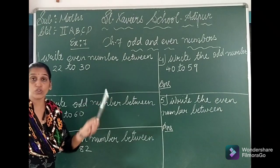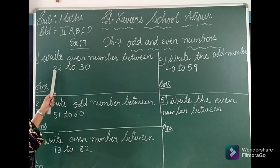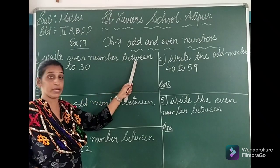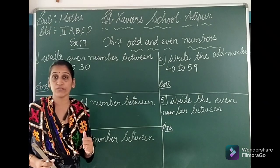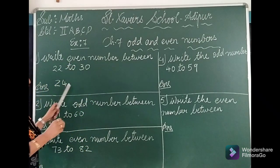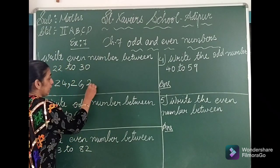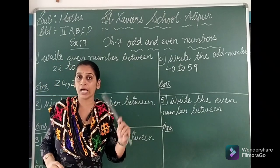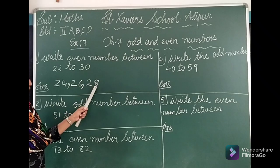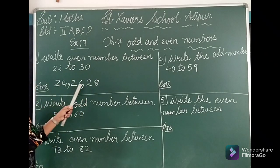We have to look at the between numbers. What we have to keep in mind: whichever numbers are between 22 and 30, we have to write those only. Some of you might ask if 22 or 30 should be included — no, we write only the numbers strictly between them. After 22 comes 23 — odd. Then 24 — even. 25 — odd. 26 — even. 27 — odd. 28 — even. 29 — odd. So the even numbers between 22 to 30 are: 24, 26 and 28.